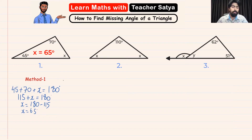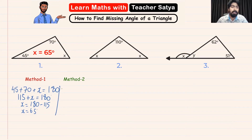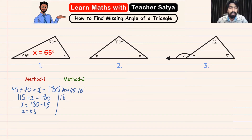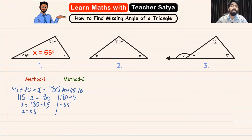Now one more method we can use instead is: step one, just add up these two angles — 70 plus 45 is equal to 115. Then take 180 and subtract 115, which will give us 65 degrees. So you can use whichever method that you want.